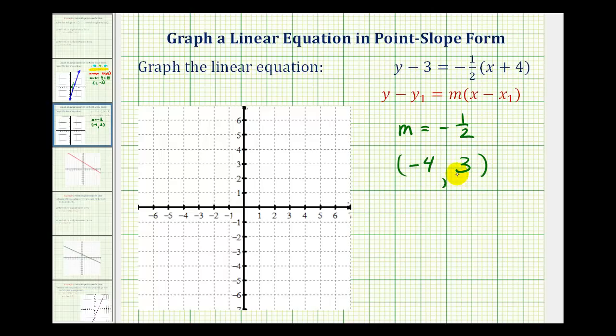So now we'll plot the point and then use the slope to determine additional points on the line. And notice how in here we have the negative sign out front of the fraction. It would probably be easier to use this slope if we move the negative up into the numerator. So we can think of this as a ratio of negative one to positive two.